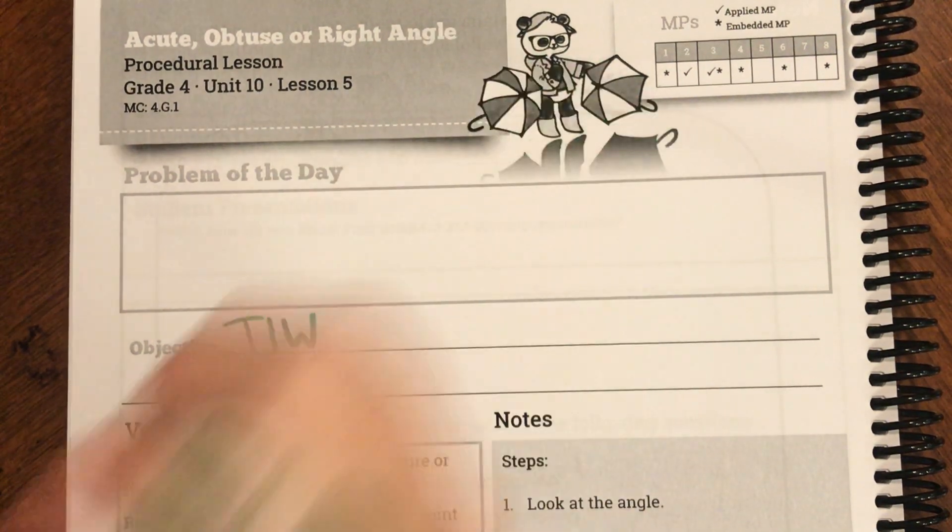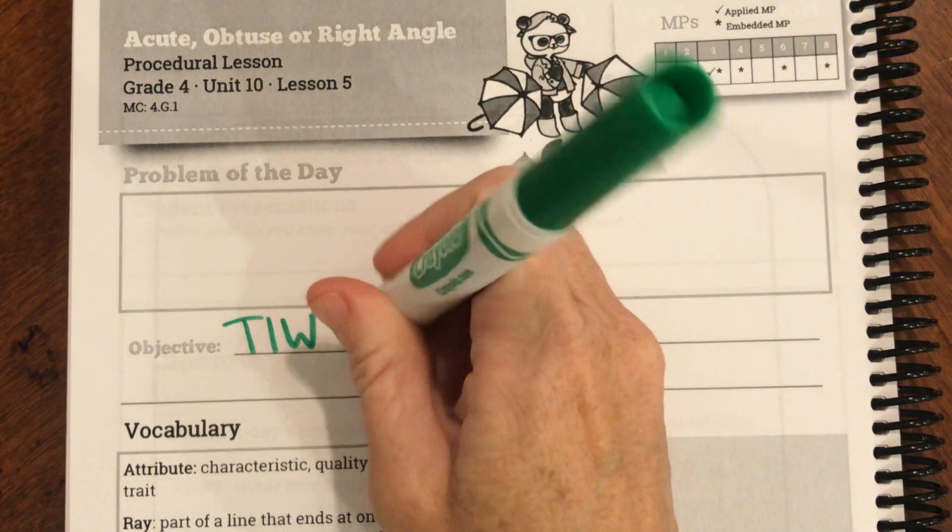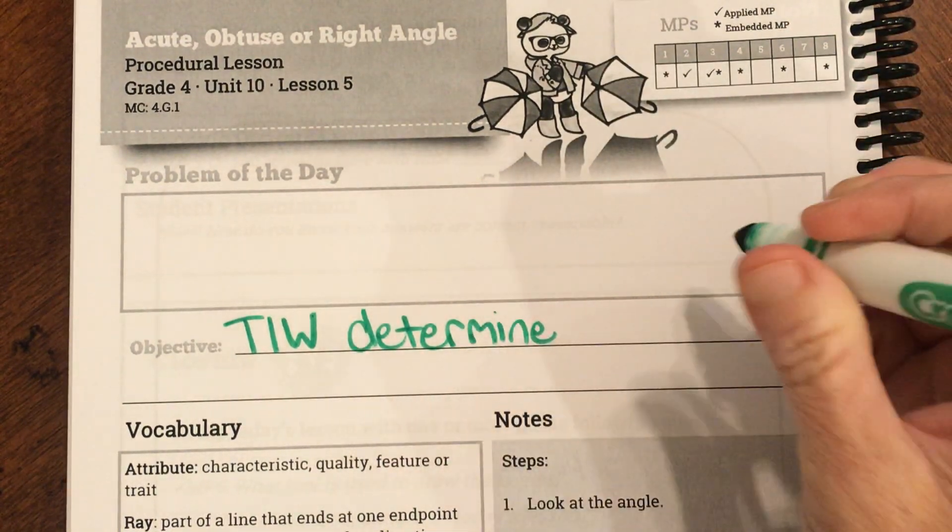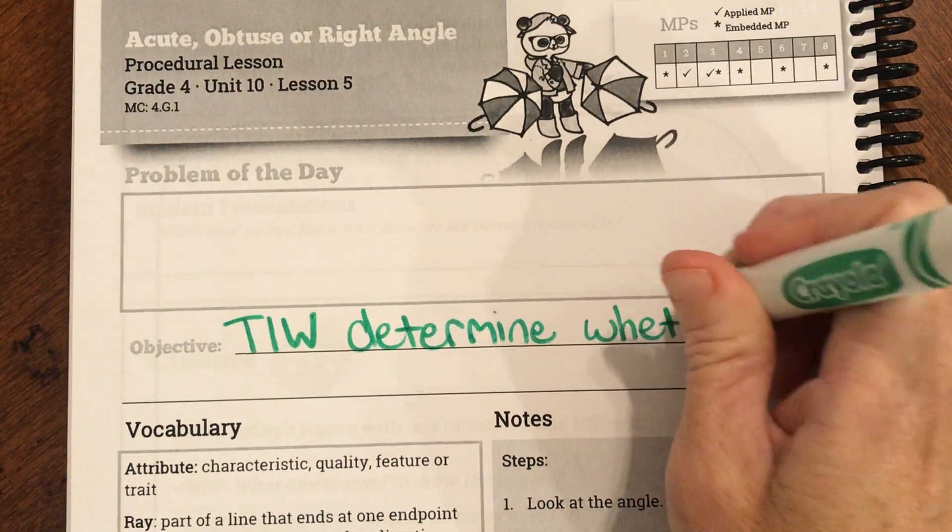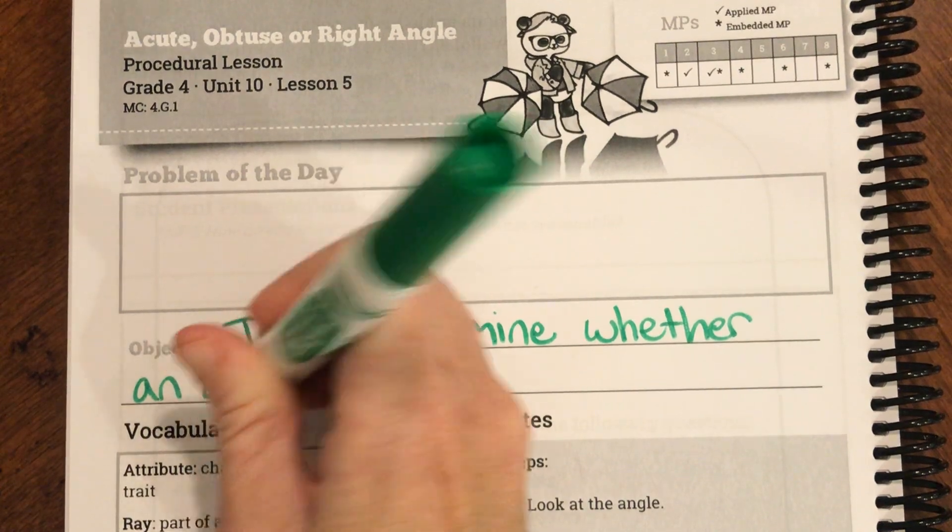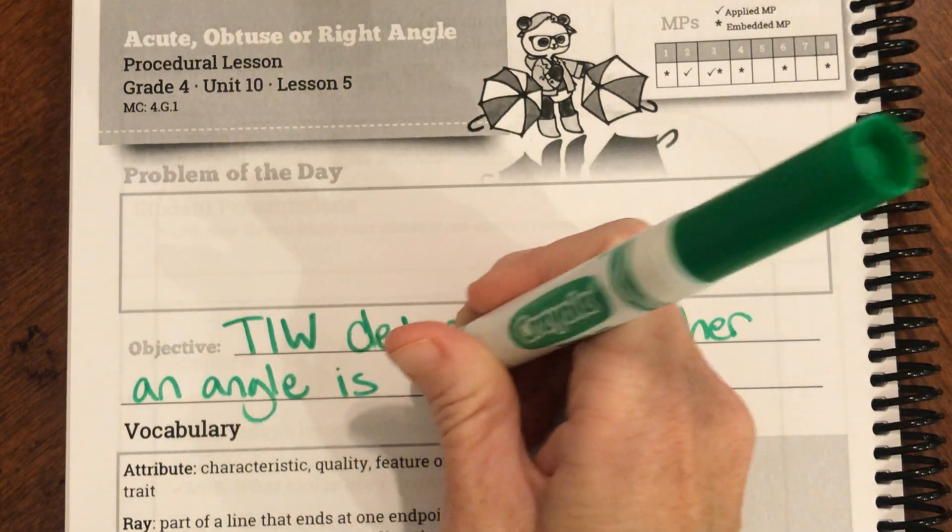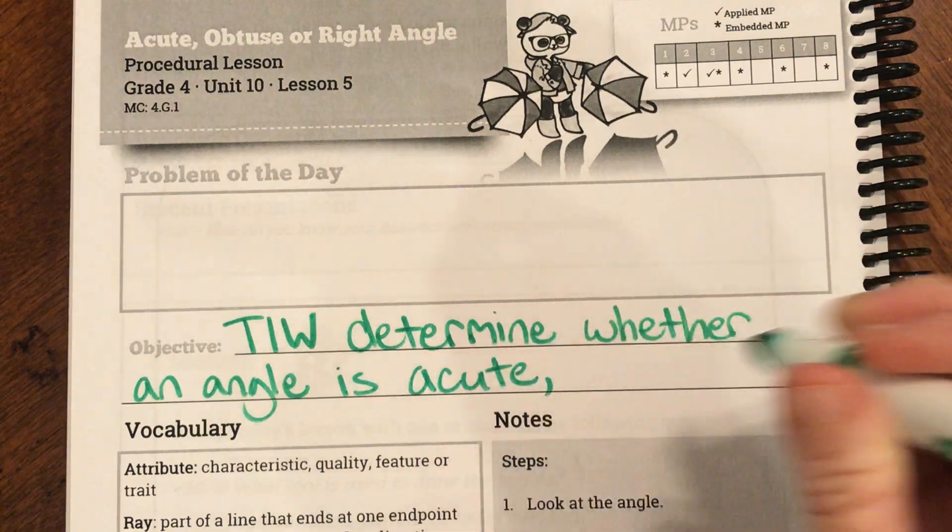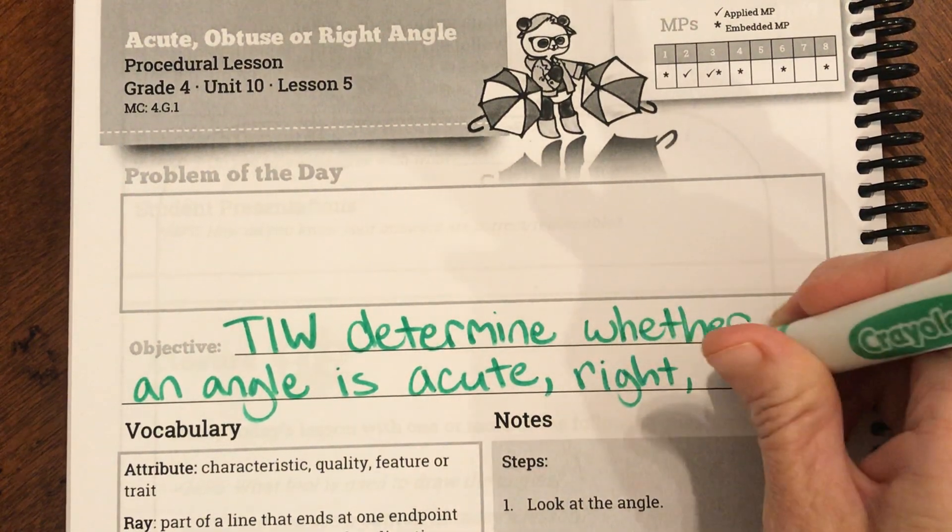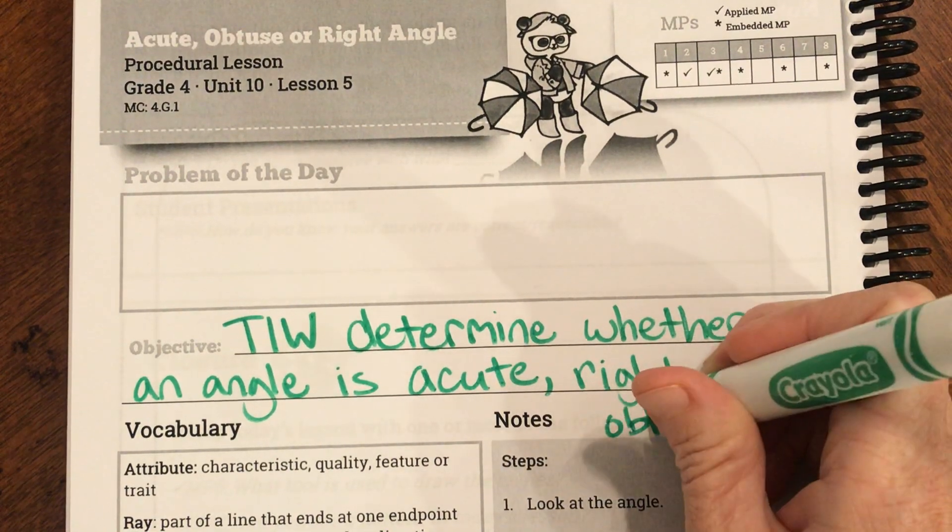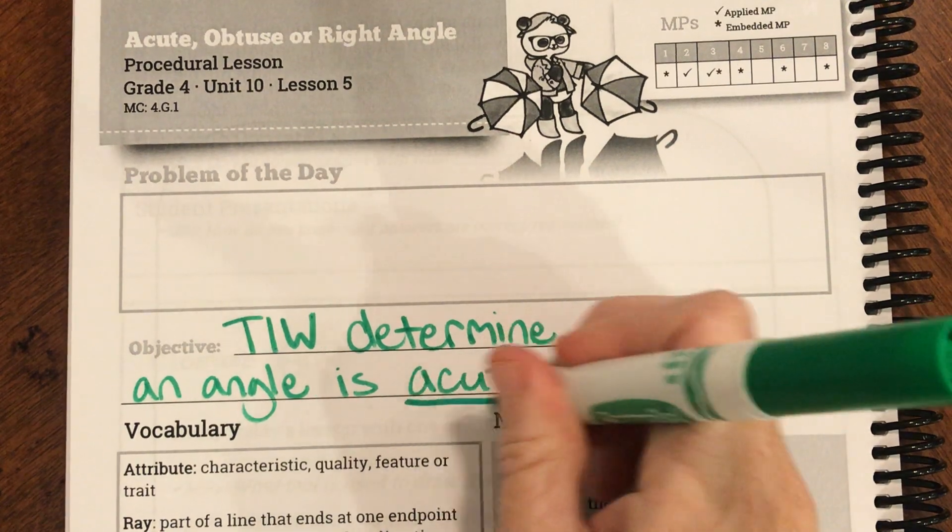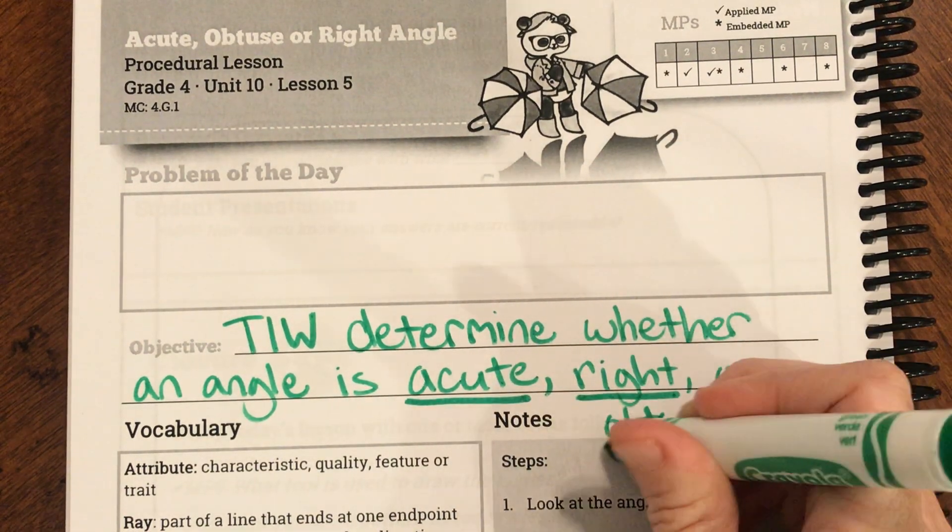Our goal today is, today I will determine whether an angle is acute, comma, right, comma, or obtuse. And our three words are acute, right, or obtuse. Those are going to be words that we really need to learn and they're just going to tie into what we did yesterday and the day before.